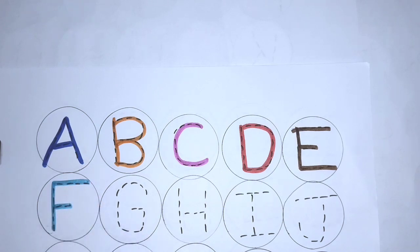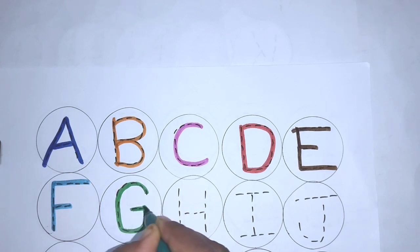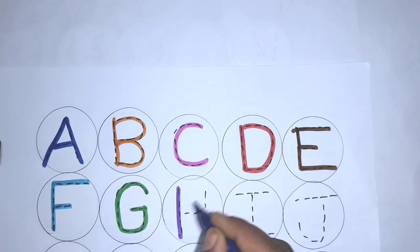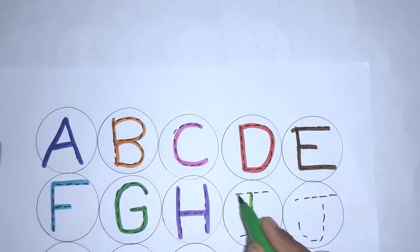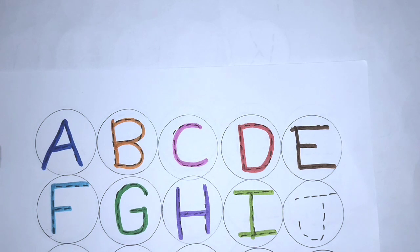I, J, K, L, M, N, O, P, Q, R, S, U, V, W, X, Y and Z. Now I know my ABCs. Next time won't you sing with me?